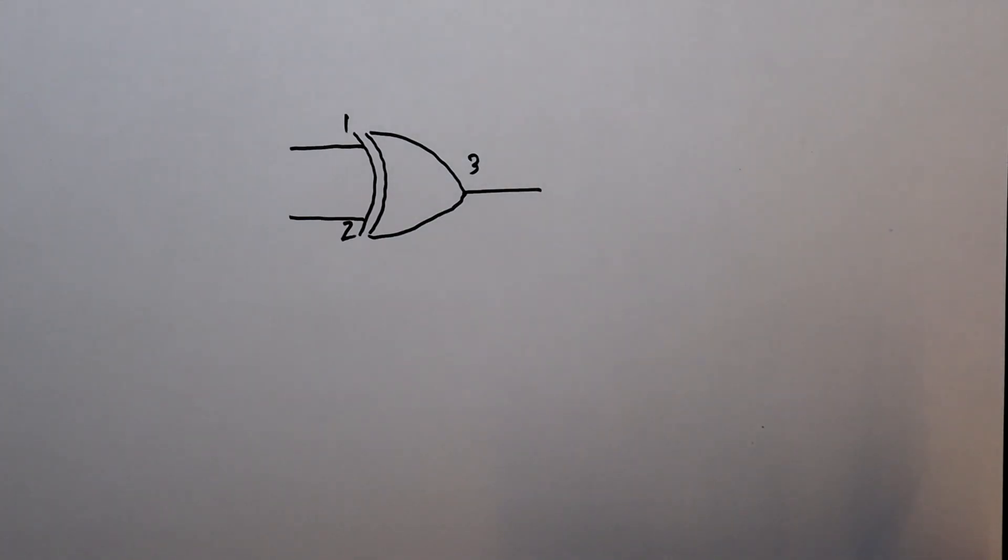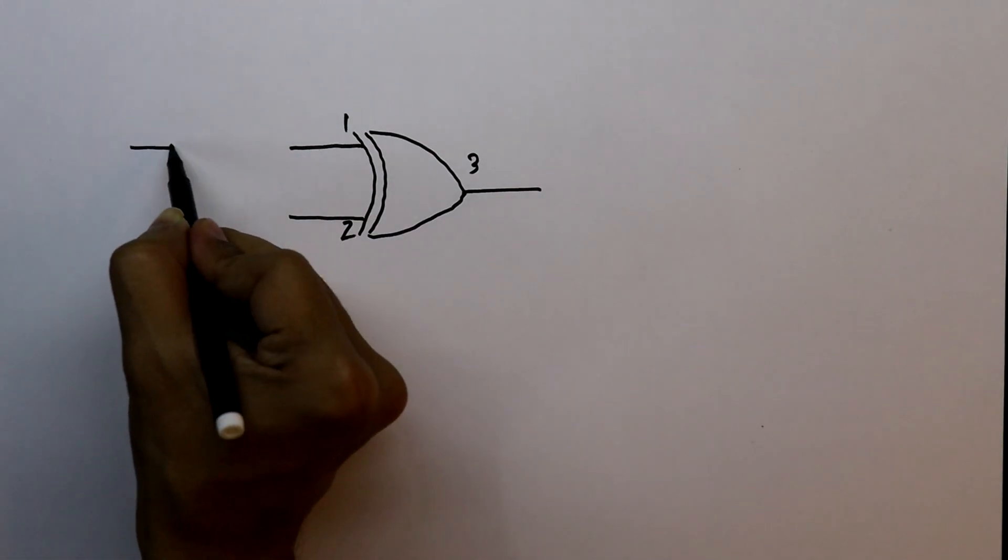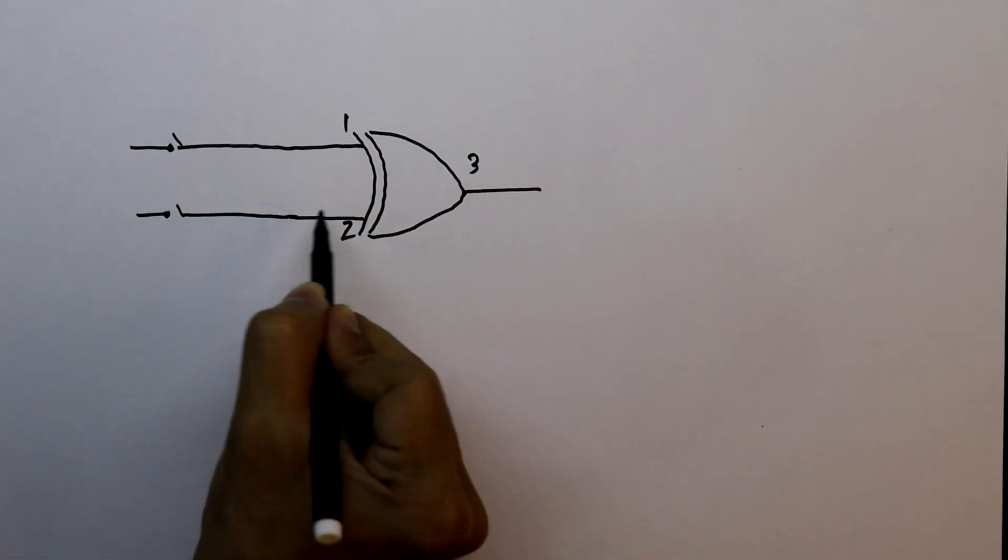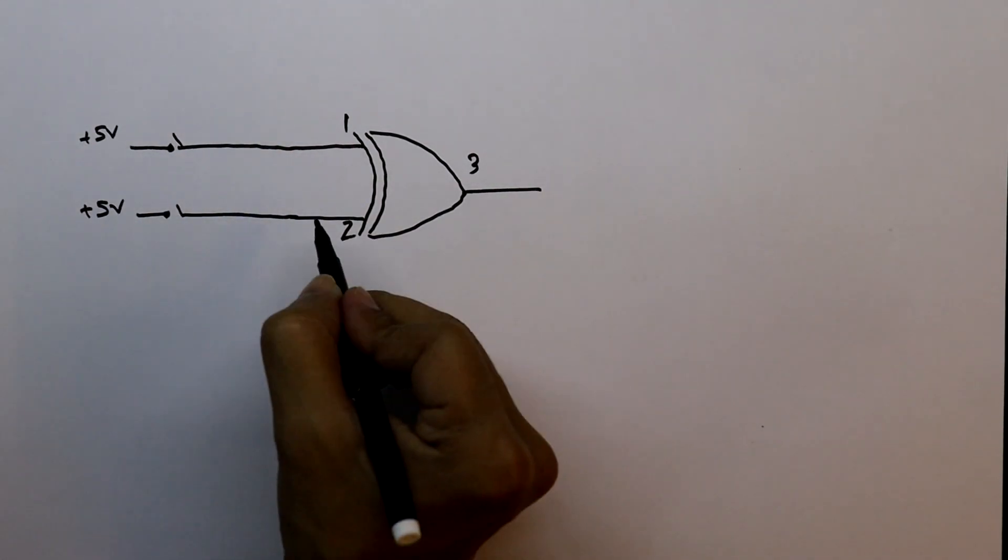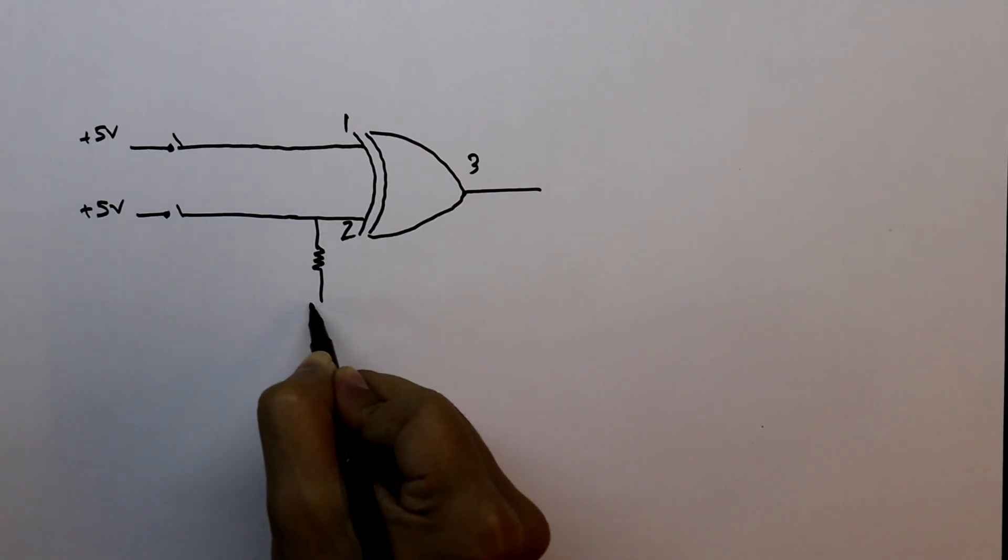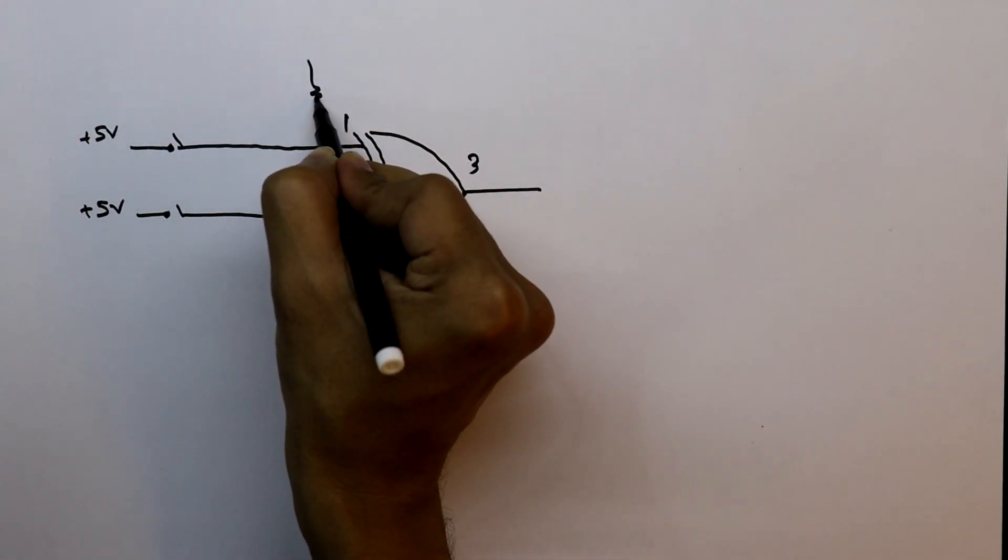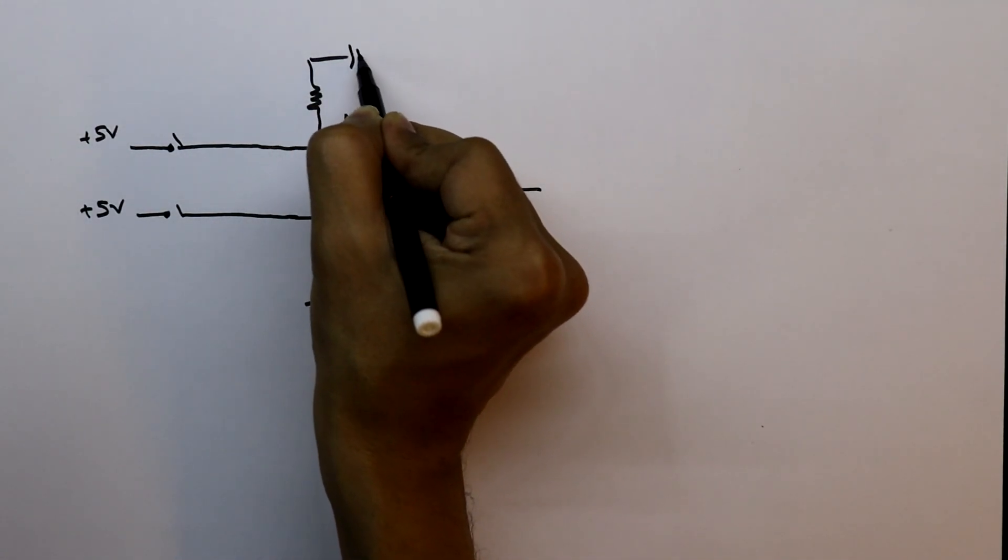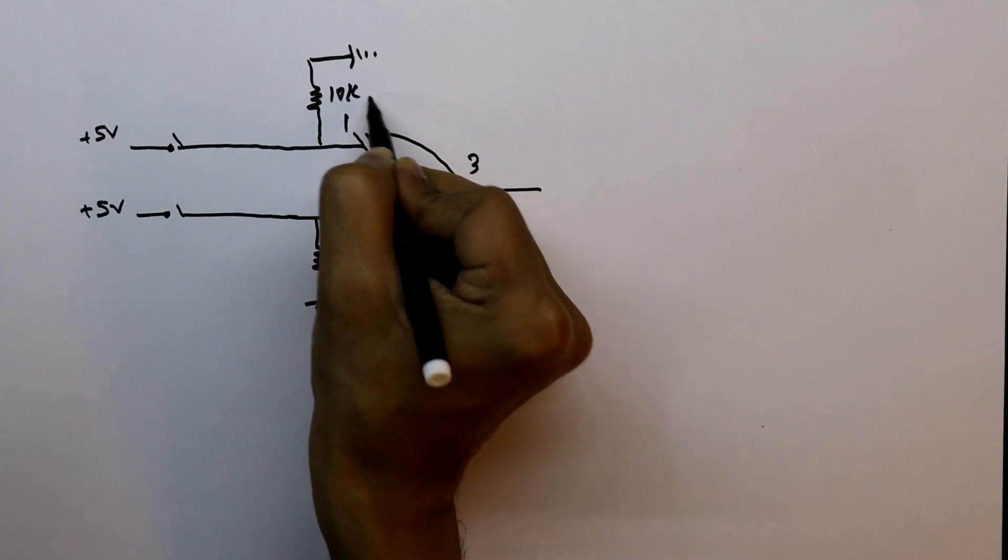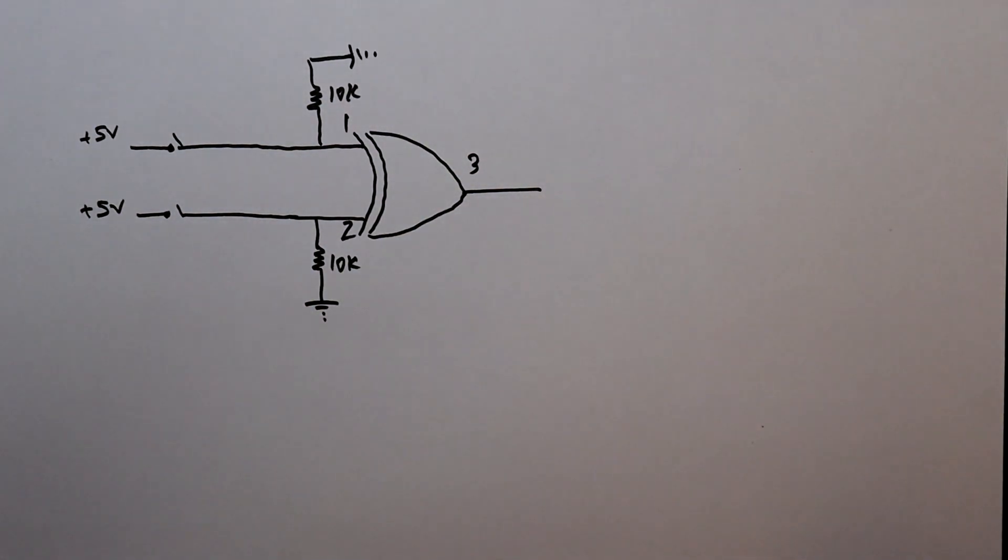We will provide the inputs with a switch. And the other pin of the switch is connected to the plus 5V. With the input, we have to connect pull-down resistor. And I already explained why you should connect the pull-down resistor with the input of digital IC. Link is given in the description below. The value of the resistor is 10 kilohms.